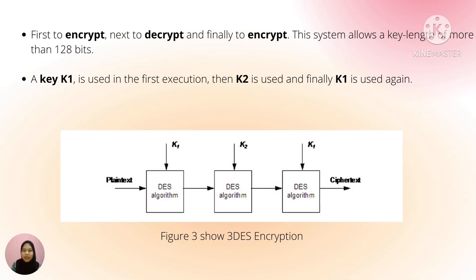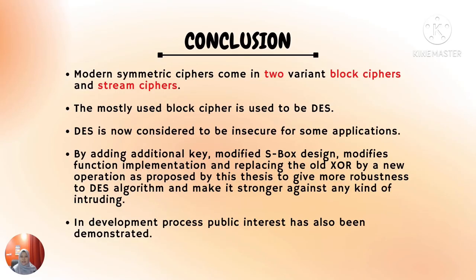In conclusion, ciphers come in two main variants: block ciphers and stream ciphers. DES, as a block cipher, has proved to be a well-designed algorithm. However, DES is now considered insecure for some applications. By adding an additional key, modifying the block design, modifying function implementations, and replacing certain operations with new ones, it is possible to give more robustness to the DES algorithm and make it stronger against any kind of intrusion. Public interest in its development process has also been demonstrated. Thank you.